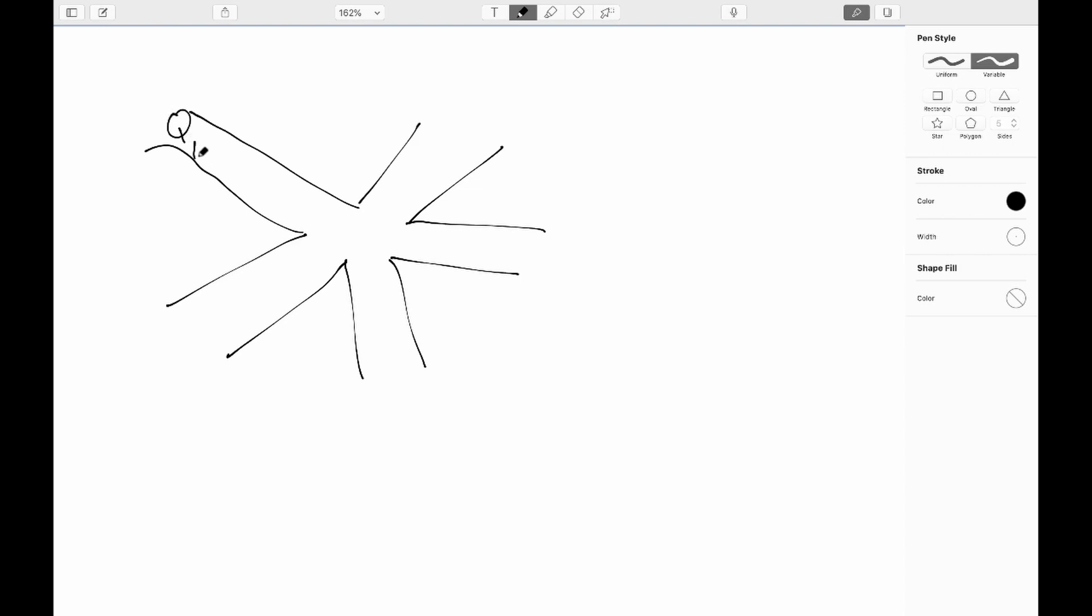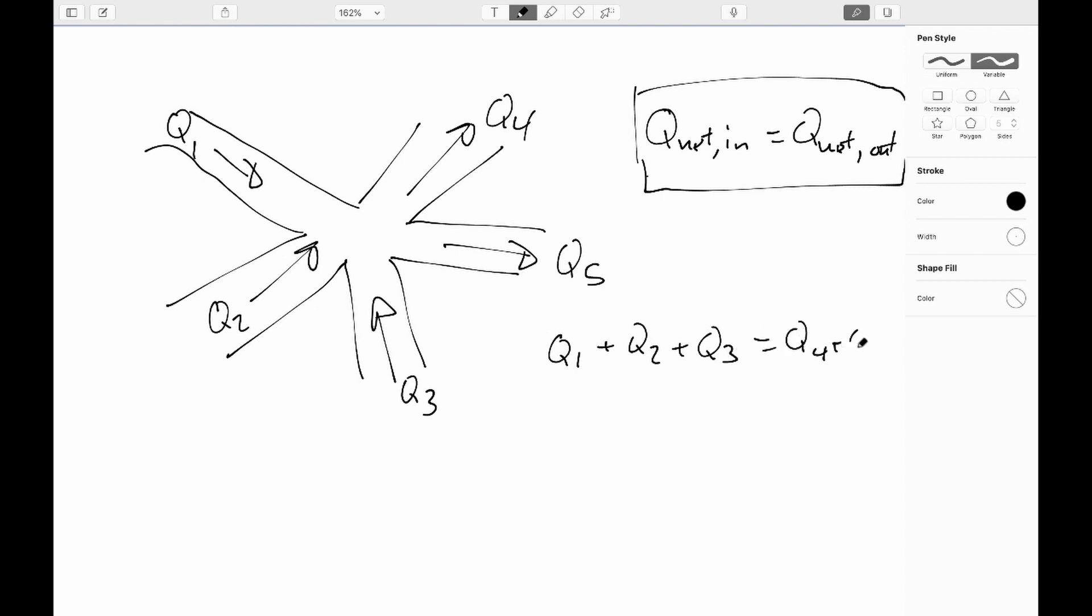So we've got volumetric flow rate Q1 going into this pipe, Q2 going in there, say Q3 going in there, Q4 going out there, Q5 going out there. What we're going to require in a complicated situation like this is Q net in equals Q net out. So in this example here, we would be demanding that Q1 plus Q2 plus Q3 equals Q4 plus Q5.